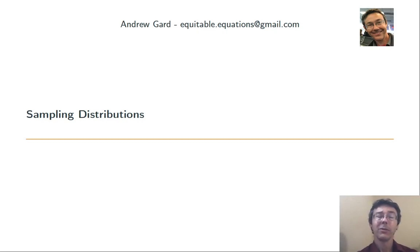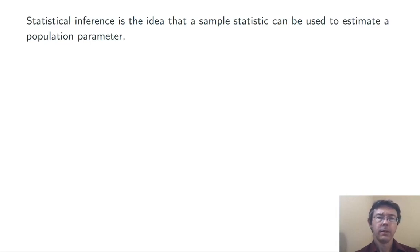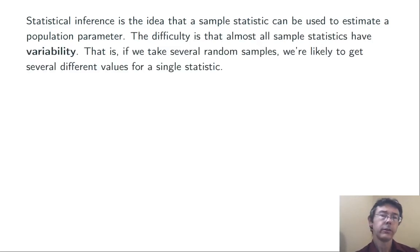Hey everybody. Today we're talking about sampling distributions of statistics. The whole point of statistical inference is to use sample statistics to estimate population parameters. The trouble is that sample statistics are almost always variable. In other words, if you do the same sort of sample repeatedly, you're probably going to get different values for the same statistic.